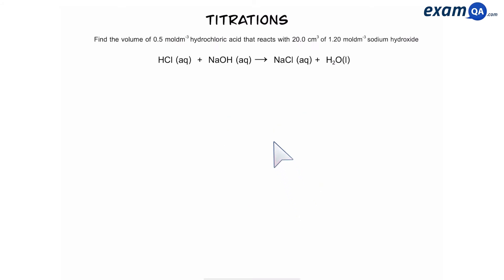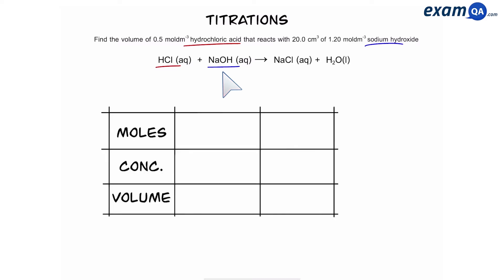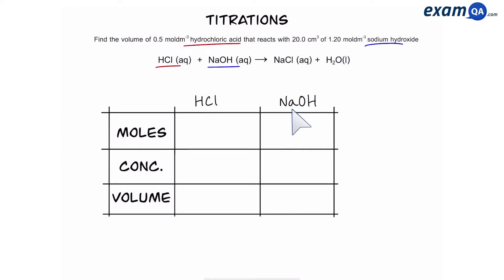Let's look at a question together. In this question, we have to work out the volume of hydrochloric acid. The first thing you want to do is identify the two main reactants — one of them is hydrochloric acid, and the other one is sodium hydroxide. We're going to make a table, writing moles, concentration, and volume down the side, then write down hydrochloric acid and sodium hydroxide — the two main reactants we identified.